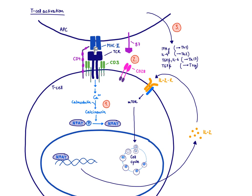During proliferation, signal 3 cytokines are produced by the antigen-presenting cell. The type of cytokine depends on which invader was originally detected. If there is a lot of interferon-gamma production, it drives a Th1 response. If there is IL-4 production, it drives a Th2 response. If there is TGF-beta and IL-6 production, it drives a Th17 response. And if there is only TGF-beta without other pro-inflammatory cytokines, there will be a T-regulatory cell response.